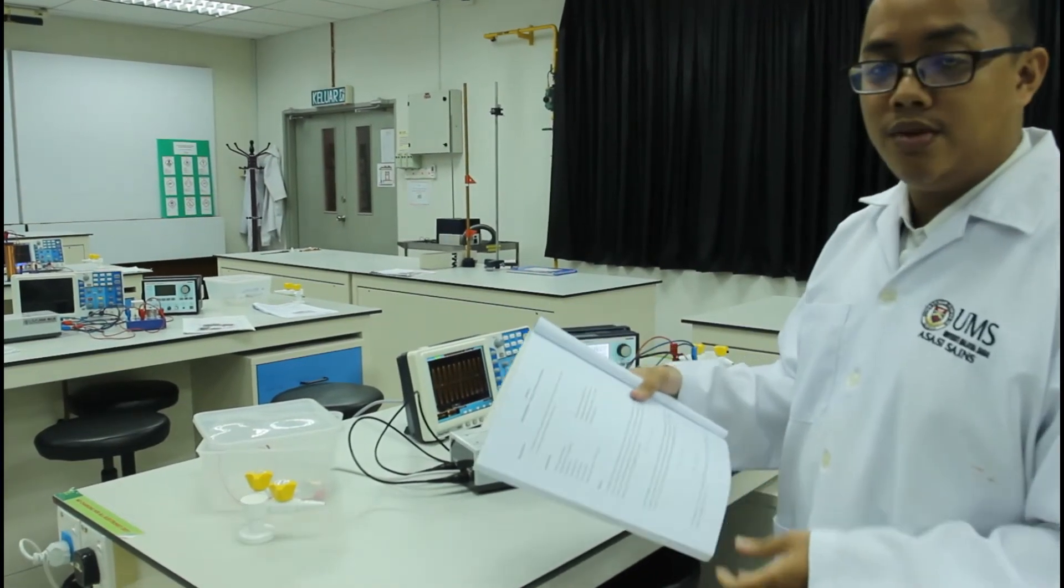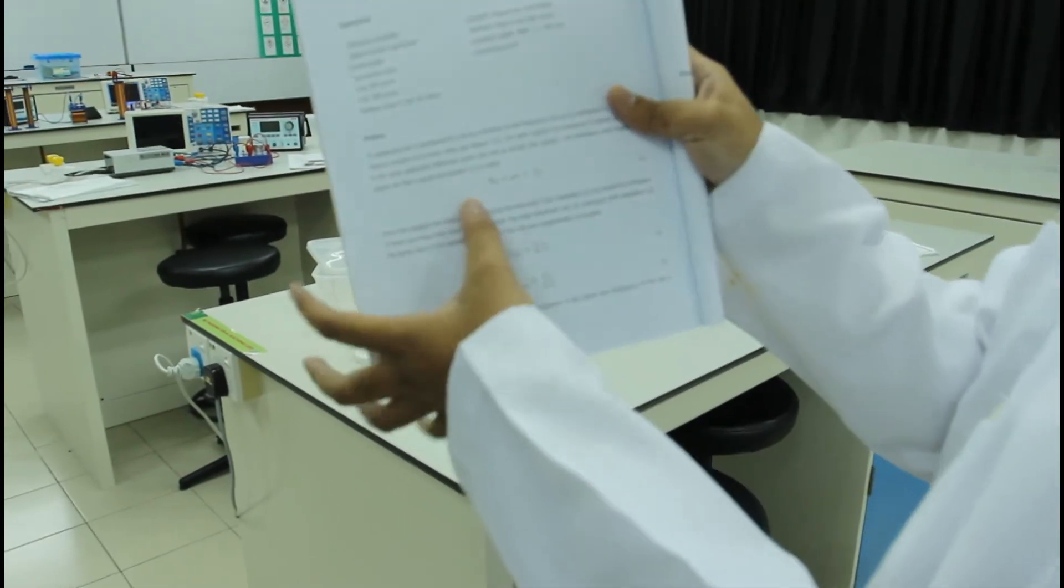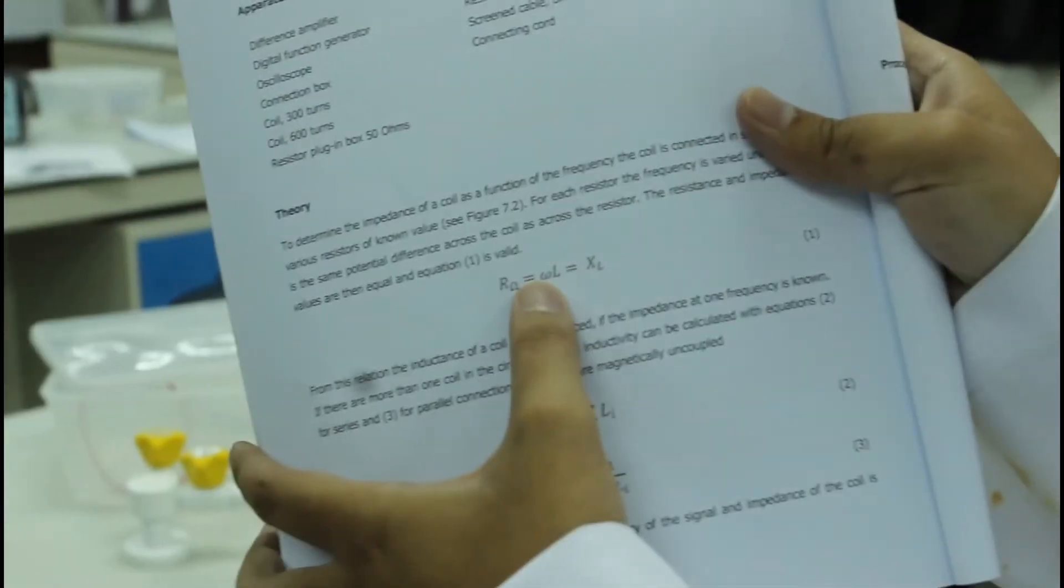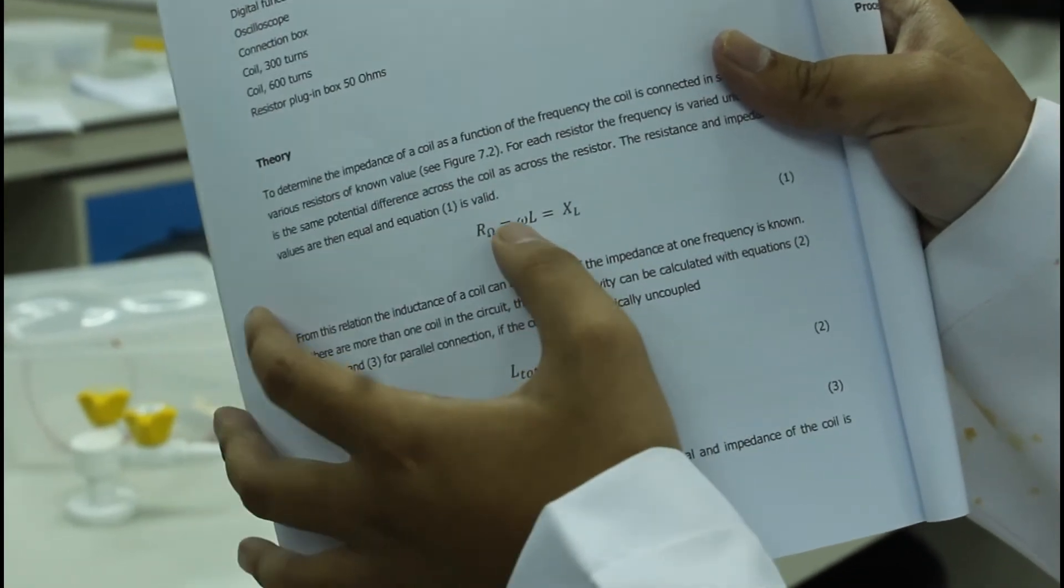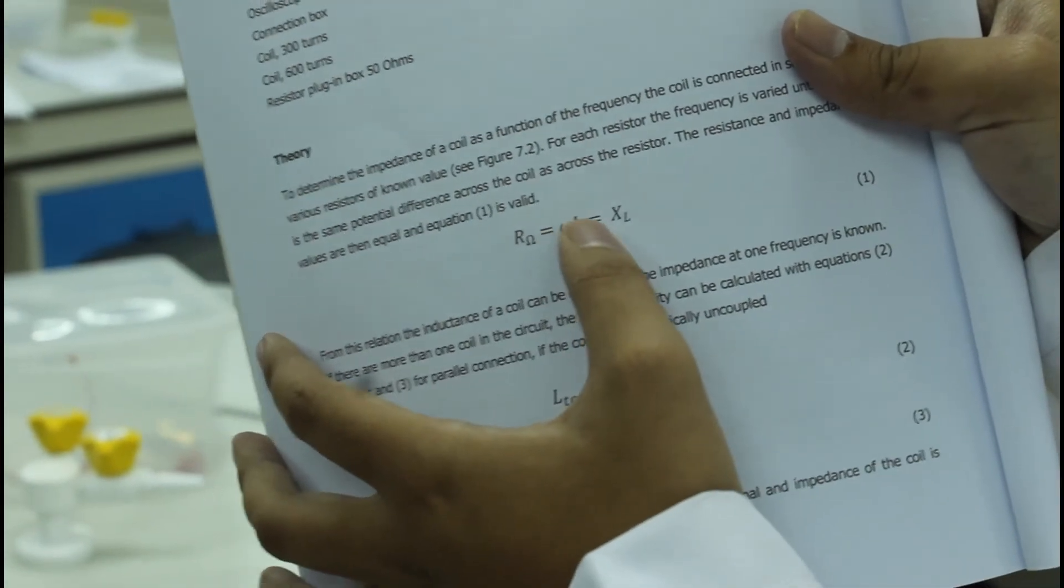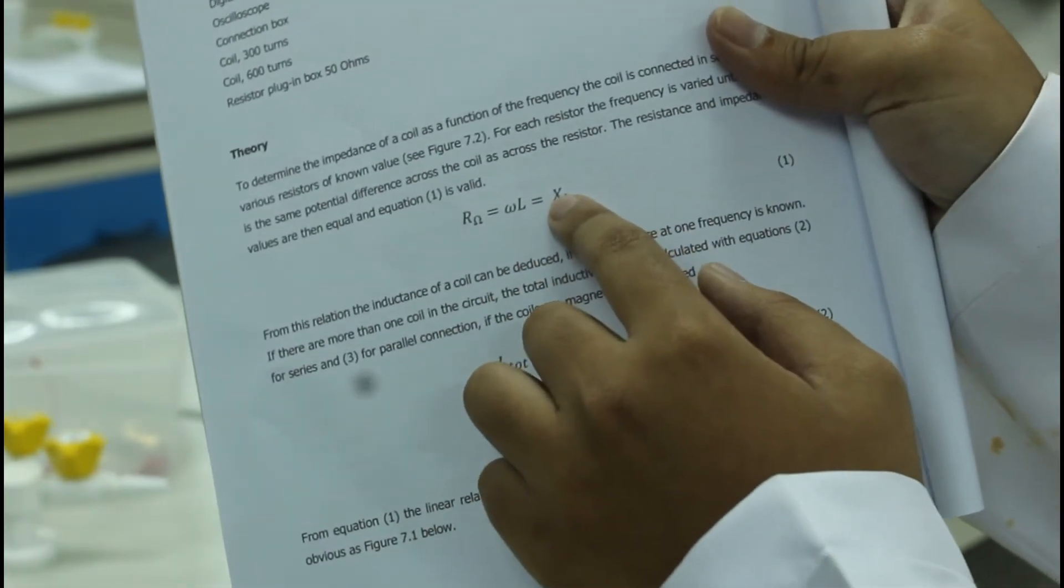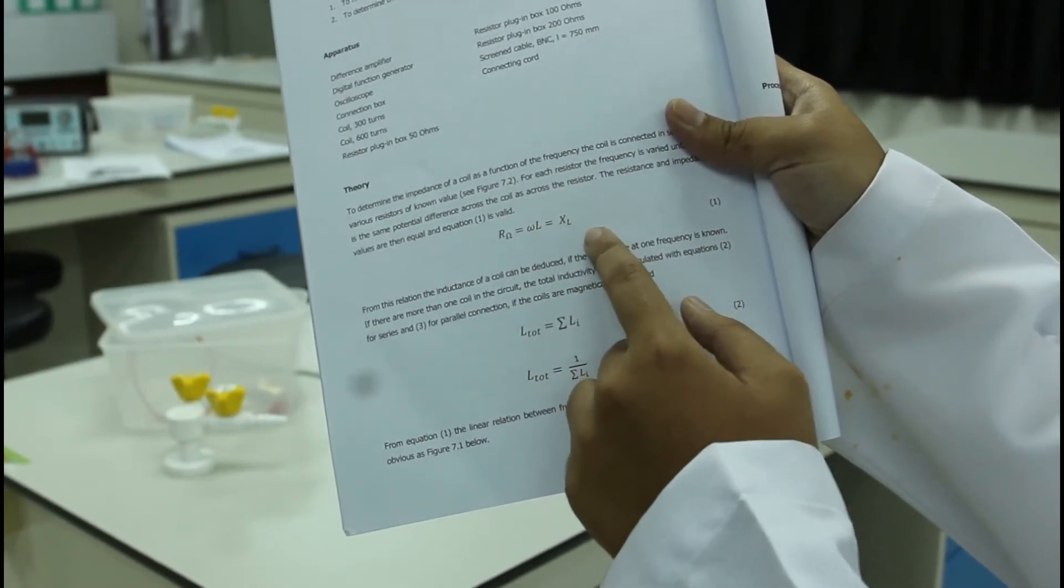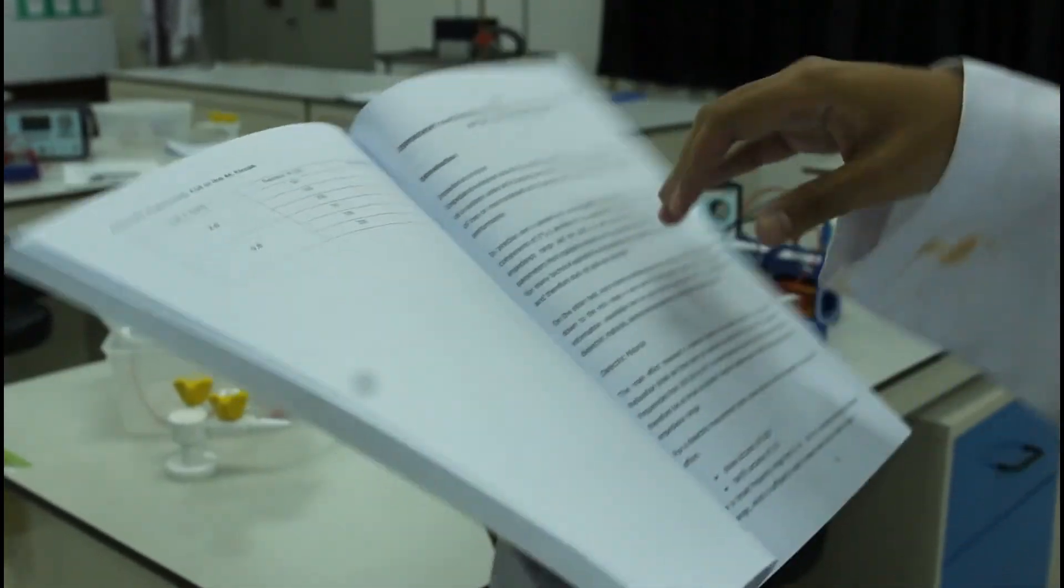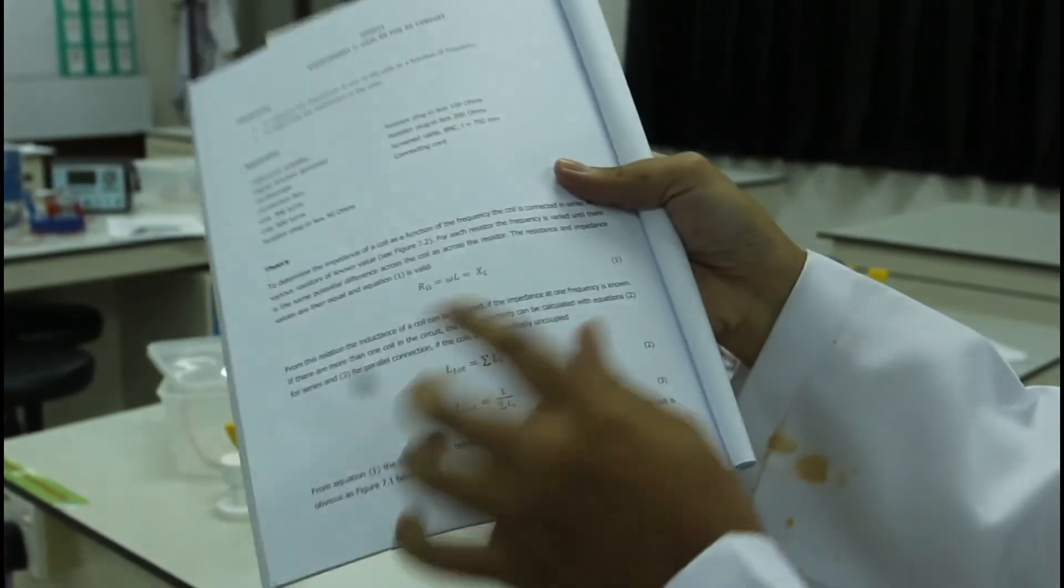Moving on to the second objective, which is to determine the impedance of the coils. So in this objective, we will be using equation 1, which is ωL equals to XL. This ω here refers to angular frequency, which also equals to 2πF. So putting it into equation 1 and rearranging it to get the L value, we will get L equals to XL over 2πF. So the XL here refers to the inductive impedance we calculated just now, and F here refers to the frequency which is the experimental one that we fill in here. So we'll be using both of these values in the first equation to get the value of the inductance here.